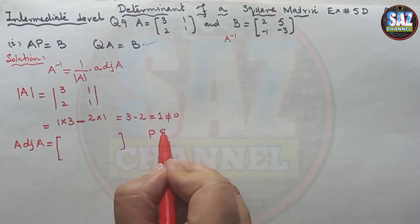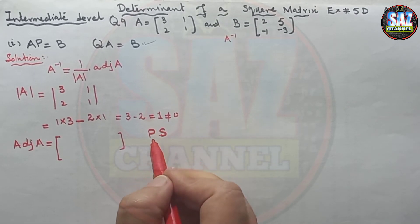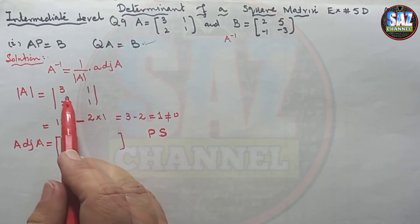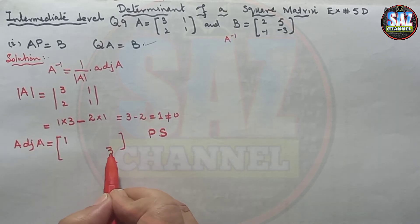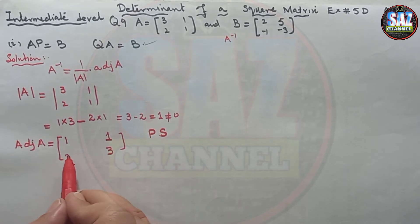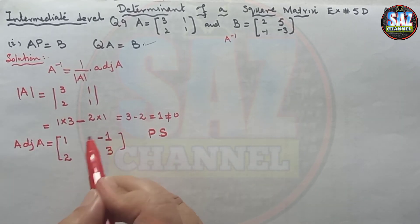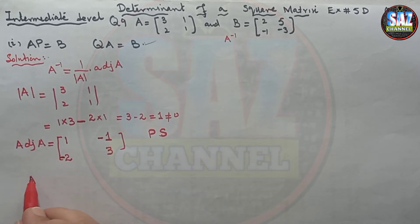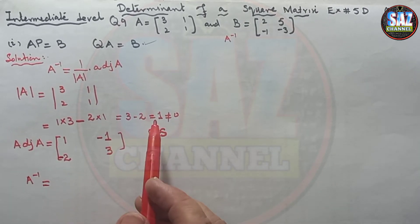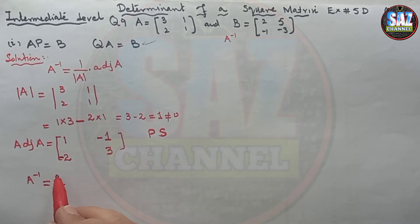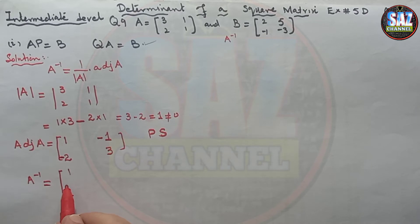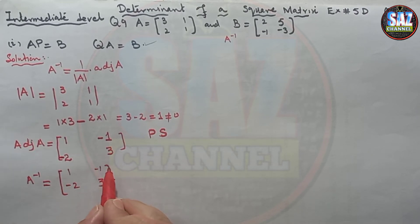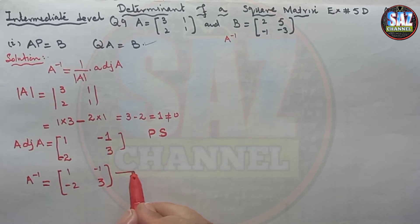For the adjoint, recall the mnemonic PS — places and signs. 'Places' refers to the diagonal entries: we swap 1 with 3, keeping them at swapped positions. Then for the 'signs' part, we attach minus signs to the off-diagonal entries. The adjoint is now complete. Substituting into the formula with determinant equal to 1, A⁻¹ = [[1, −2], [−1, 3]].